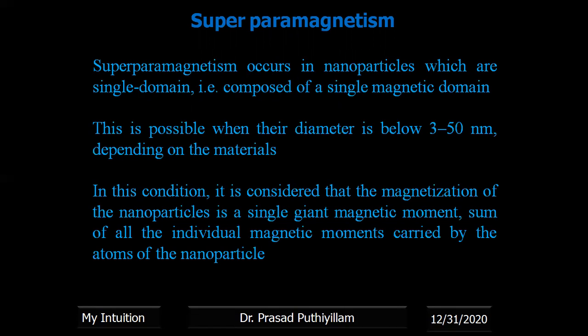The material size is in between 3 to 50 nanometers, meaning that size itself forms a single domain. If you consider a macroscopic object, it will have multiple domains. So a material with a 3 to 50 nanometer diameter comes in the size range of a single domain. Each individual nanoparticle acts as a single domain, and the magnetic moments of large numbers of such nanoparticles contribute towards the entire material's magnetism, giving us a huge magnetism which we call superparamagnetism.